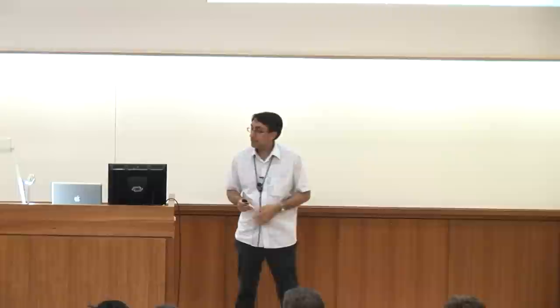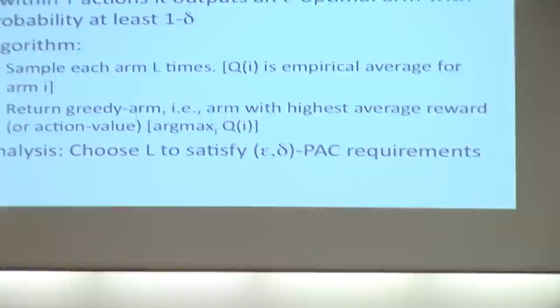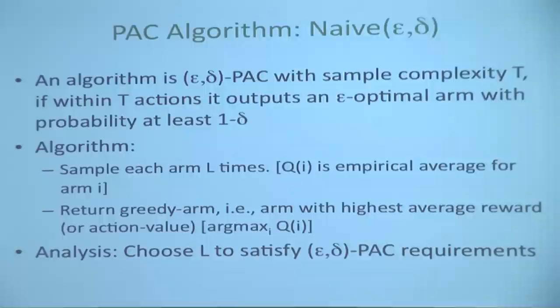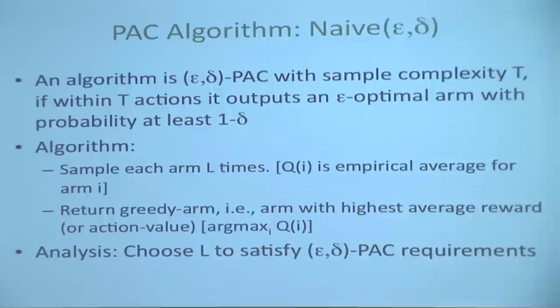Now let's try to get a result. Here's a PAC-style result. An algorithm is epsilon-delta PAC with some sample complexity T. Sample complexity means how many actions have been pulled. The objective is: I'm going to let you explore for some time — but not too long — after which you have to pick an action, and I want that action to be good. How we're going to deal with exploration: I'll let you explore for a while, however you want, but once you're done, pick an action and that action better be pretty good.